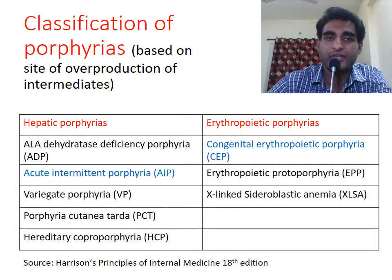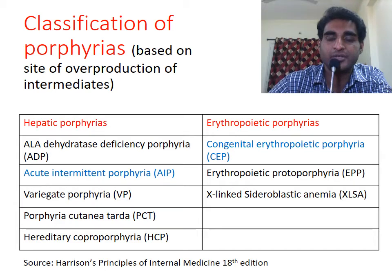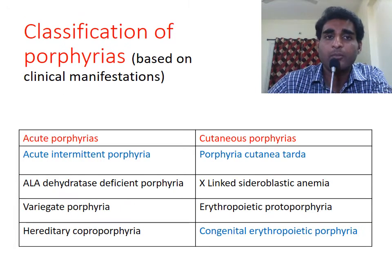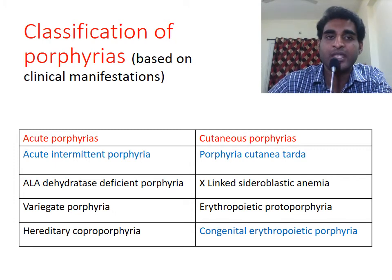Based on the site of overproduction of intermediates, porphyrias can be classified as hepatic and erythropoietic types. An example of a hepatic porphyria is acute intermittent porphyria, and for erythropoietic it is congenital erythropoietic porphyria.